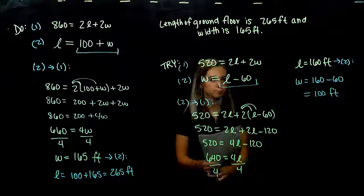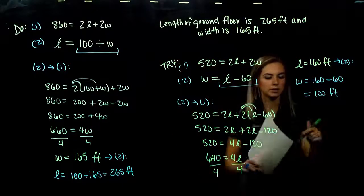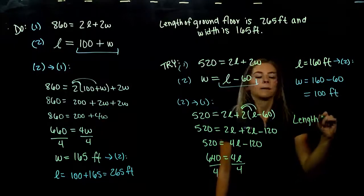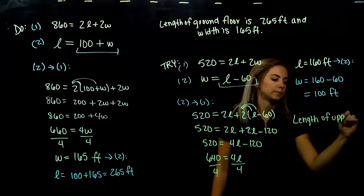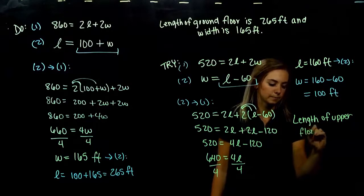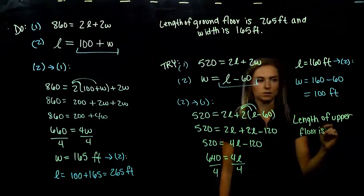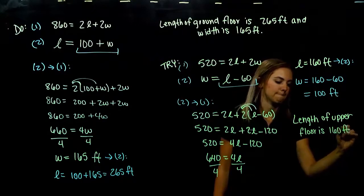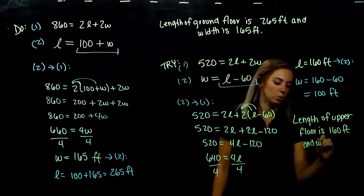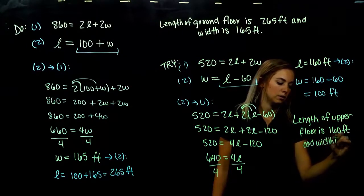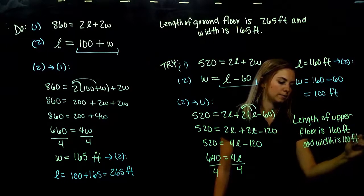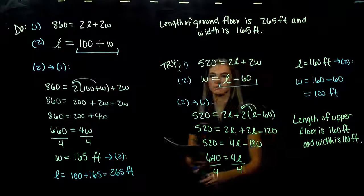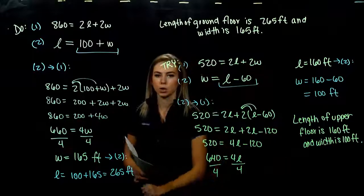Give a little sentence telling what happened: the length of the upper floor is 160 feet and the width is 100 feet. We can always check by plugging these back into the original equation to make sure it holds true.